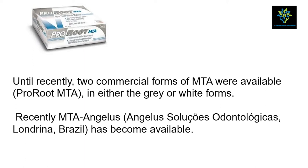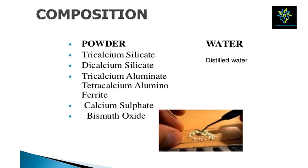Coming to the composition — in powder form this material contains tricalcium silicate, dicalcium silicate, tricalcium aluminate, tetracalcium aluminate ferrite, calcium sulphate, and bismuth oxide. For the liquid, we use only distilled water; there is no separate liquid for MTA. You mainly need to remember the powder part — mainly calcium silicate.